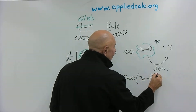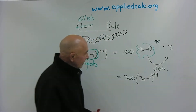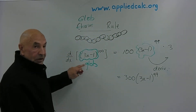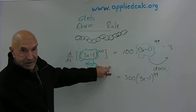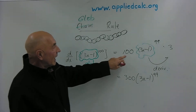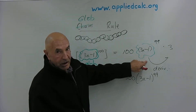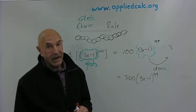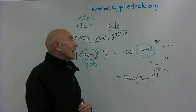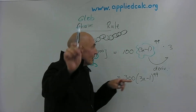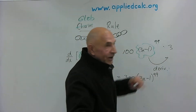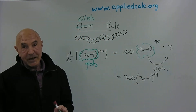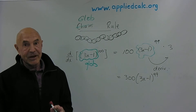In words: the derivative of a glob to a power is the power times the glob to the power minus one, times the derivative of the glob. You're always going to want to remember that last part — the derivative of the glob.